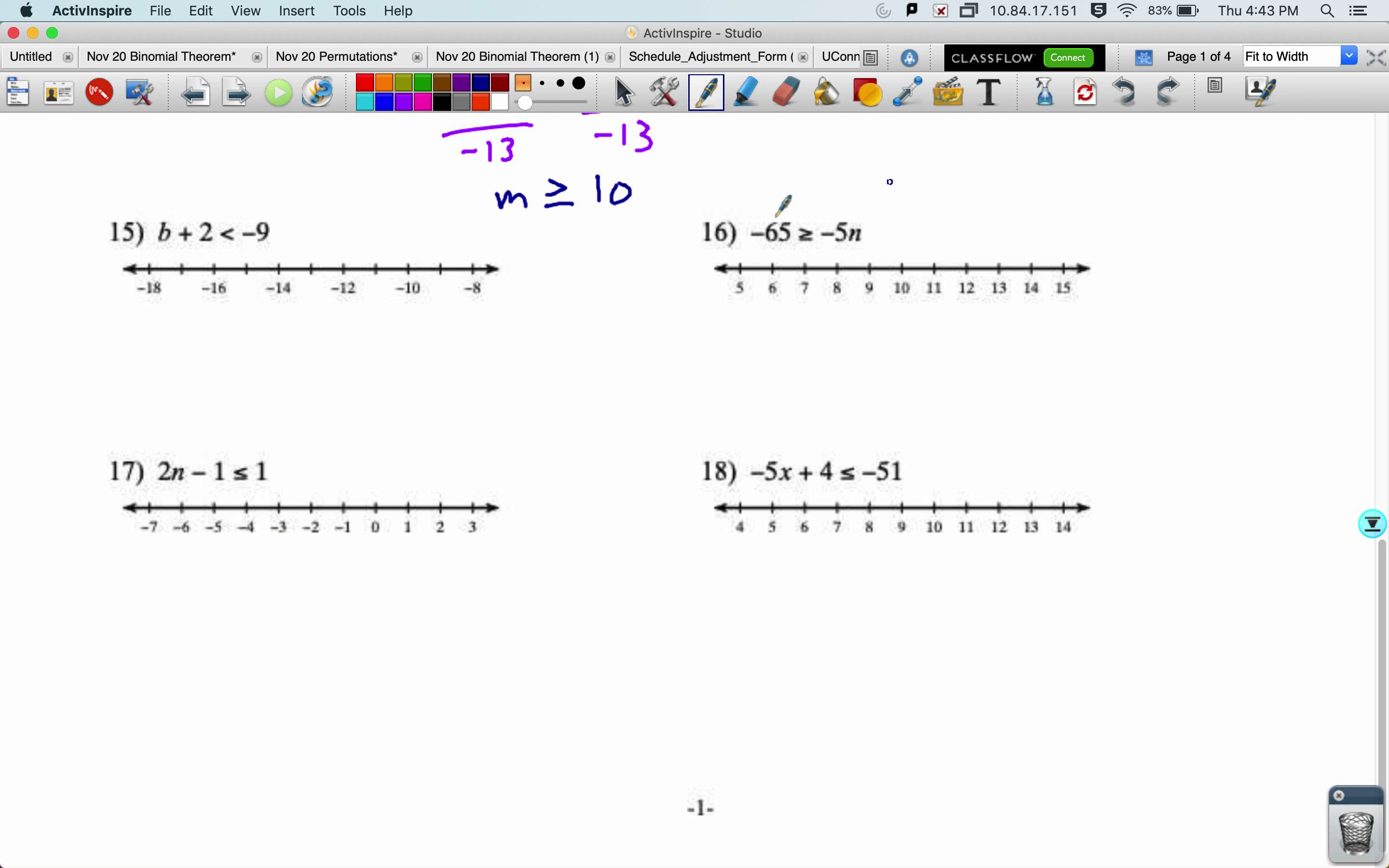So negative 65 is greater than or equal to negative 5n. I divide both sides by negative 5, and I get a 13 on this side. I divide it by a negative, so my inequality flips direction. But this is harder to graph, because the variable's not on the left side. So you take it and you flip it around, so the variable's on the left, and it's greater than or equal to 13. Now it's easier to graph, because I can use that trick, that the arrow points in the same direction as inequality. So here, that's pointing the wrong way. I'm going to flip it around. Now I can use that trick.